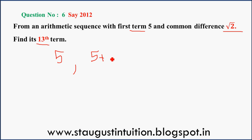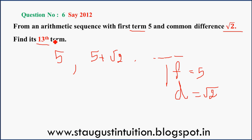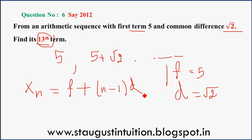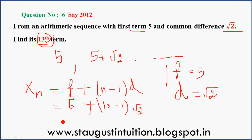The first term is 5 and the common difference is root 2. The question asks for the 30th term. We know Xn equals first term plus (n minus 1) into d. So X30 equals 5 plus (30 minus 1) into root 2, which is 5 plus 29 root 2.